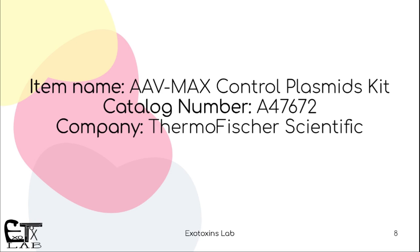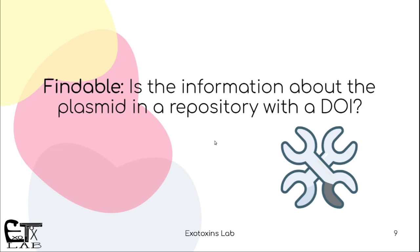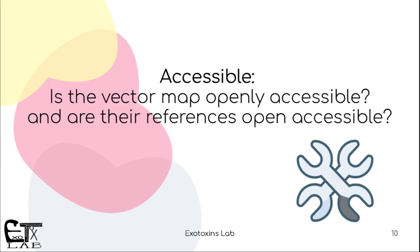Here's the summary of the exploration I just showed you. The item name was the AAV Max Control Plasmid Kit — it's a kit with several plasmids. Is it Findable? No, not really. The information was not in any repository with a DOI or a unique identifier, and I could not find the sequence. There's a lot of space for improvement here. Is it Accessible? Could we open the map and look at the references? Not that I was able to. Again, something to improve here.